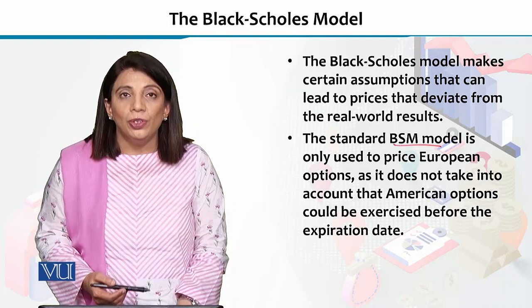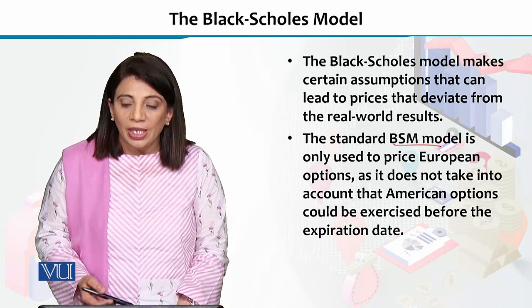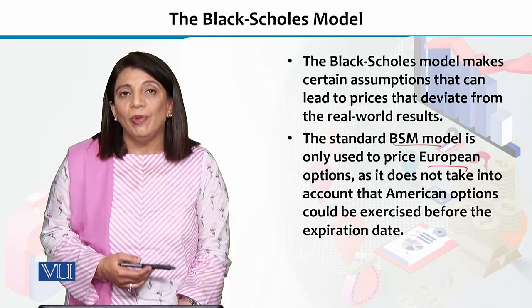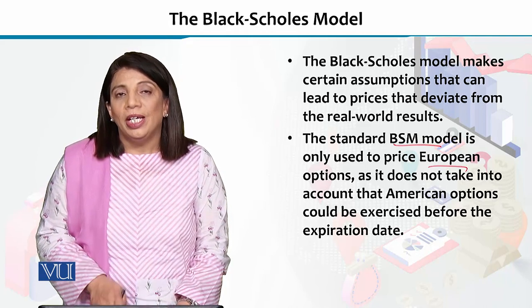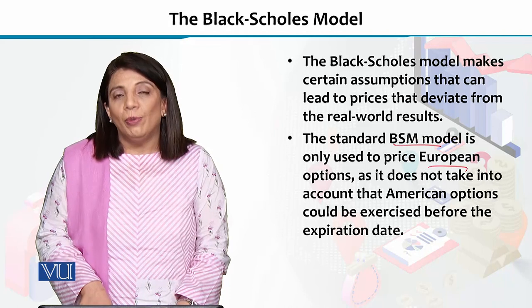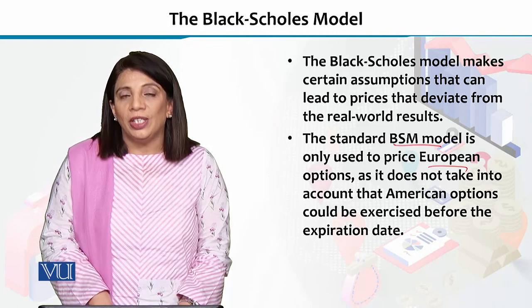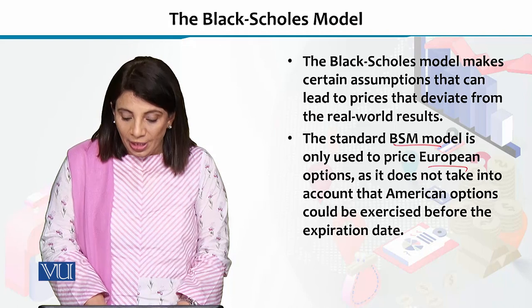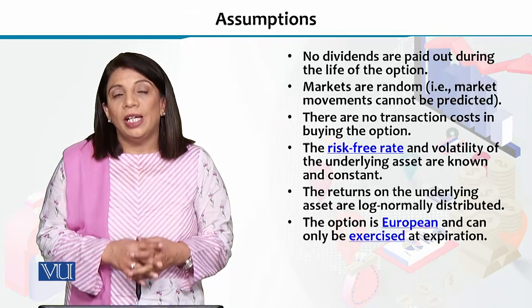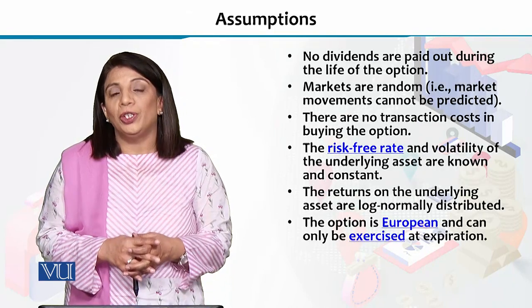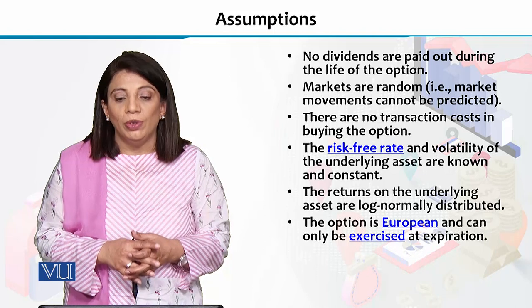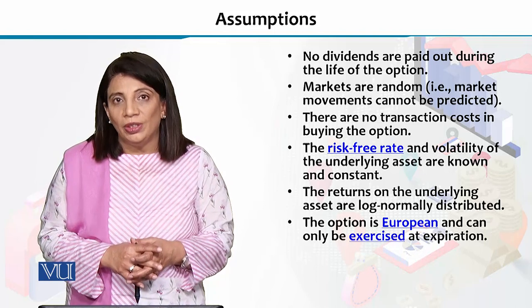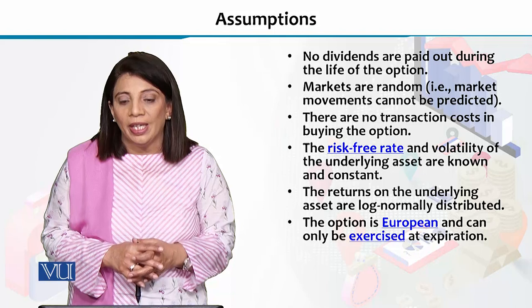The Black-Scholes Merton model, the standard BSM model, is only used to price European options. That means European options can only be exercised on the maturity date — it cannot be before. The BSM model is only applicable to European-style options.